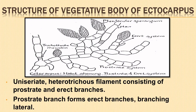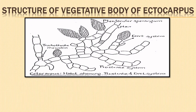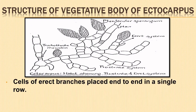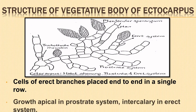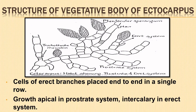The prostrate portion creeps on the soil, attaches to a substratum and forms erect branches. Branching of the thallus is always lateral. The cells of the erect branches consist of a single row of cells placed end to end and are polysiphonous in nature. There are variations in the growth of the thallus — it is apical in the prostrate system while intercalary in the erect system.